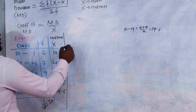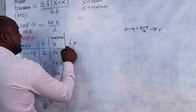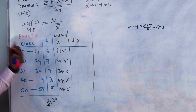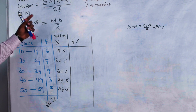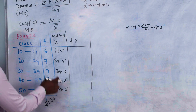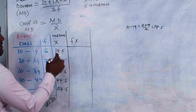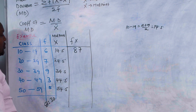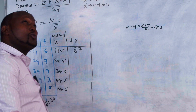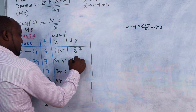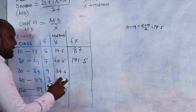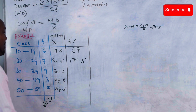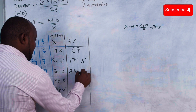As we are calculating the mean, we need f times x. The mean is summation of f times x over summation of f, so we need to get the total of fx. fx is simply f times x where x is the midpoint. So: 6 × 14.5 = 87, 7 × 24.5 = 171.5, and 9 × 34.5 = 310.5.